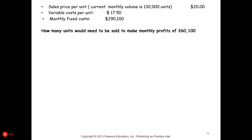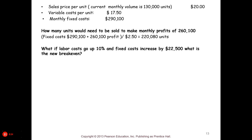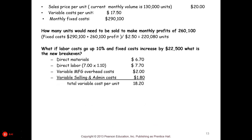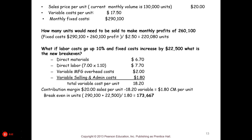To make a monthly profit of $260,100, we take fixed costs plus the target profit, divided by $2.50, which tells us we need to sell 220,080 units. Now, what if labor costs go up 10% and fixed costs increase by $22,500? We have to come up with our new total variable cost per unit and a new contribution margin per unit. With the higher fixed costs added on and the lower contribution margin, break-even is now 173,667 units.